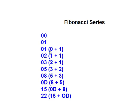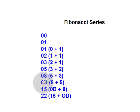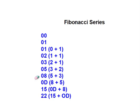We keep adding the previous two numbers to get the new number. So we have: 0, 1, then 1+1=2, 2+1=3, 3+2=5, 5+3=8. In hexadecimal, 8 is 08 and 5 is not 13 but 0D, because we are working in hexadecimal. So 0D + 08 = 15, and 15 + 0D = 22. This is the Fibonacci series in hex.